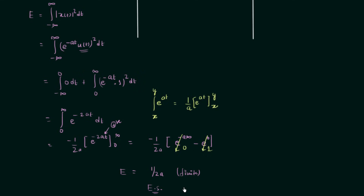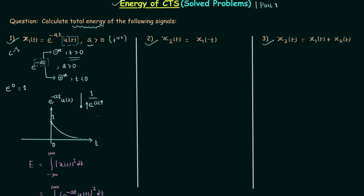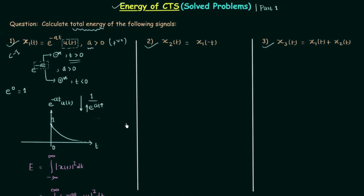Since the energy is finite, we can say that signal x1(t) is an energy signal. There is no need to calculate the average power, because when energy is finite this implies the average power P equals 0. There are two more cases for the first question: a less than 0 and a equal to 0.